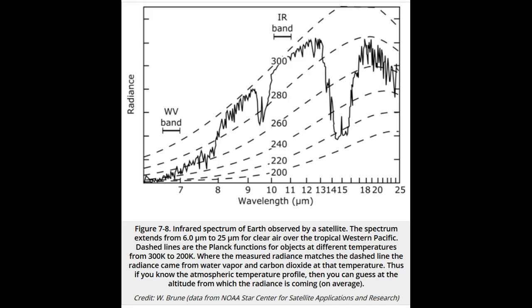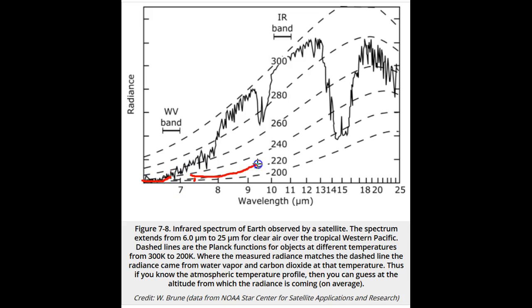At the edges of the strong water vapor absorption band at 6 microns, say at about 7.5 microns, note that the radiating temperature is about 260 Kelvin. This radiance must be coming from water vapor at 10,000 to 20,000 feet altitude. At 6 microns, the temperature is quite a bit lower, and so this radiance comes from water vapor at a much greater altitude in the atmosphere.